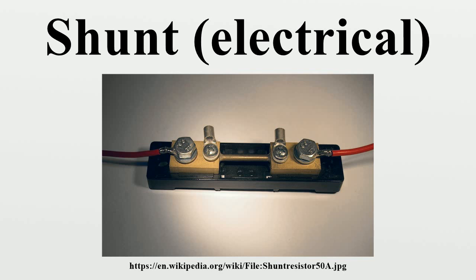Use in electronic filter circuits: The term shunt is used in filter and similar circuits with a ladder topology to refer to the components connected between the line and common. The term is used in this context to distinguish the shunt-connected components from the series-connected components in parallel with the line. More generally, the term shunt can be used for a component connected in parallel with another. For instance, a shunt m-derived half-section is a common filter section from the image impedance method of filter design.